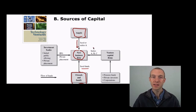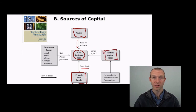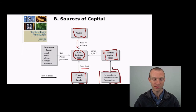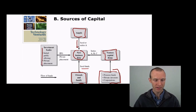Series A, B, or C are slightly later stages in funding. You might start to raise money from venture capital firms, which in turn raise their money from pension funds, private investors, and corporations. Once you get to the very latest stages, such as an initial public offering — a stock market offering — you're going to be raising money from investment banks or from private placements. So those are the main sources of capital.